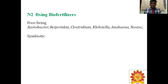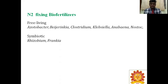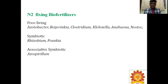Next is symbiotic, meaning they benefit each other — they are mutualistic in nature. Examples are Rhizobium and Frankia. Rhizobium produces special structures in plant roots called root nodules. Frankia also produces nodules, but not in legume plants — it is in non-legume plants such as Casuarina and Alnus species. Associative symbiotic means it can either be free-living or sometimes attached to the host and fixing atmospheric nitrogen. Endophytic means they can be present inside any part of the plant; example is Gluconacetobacter.